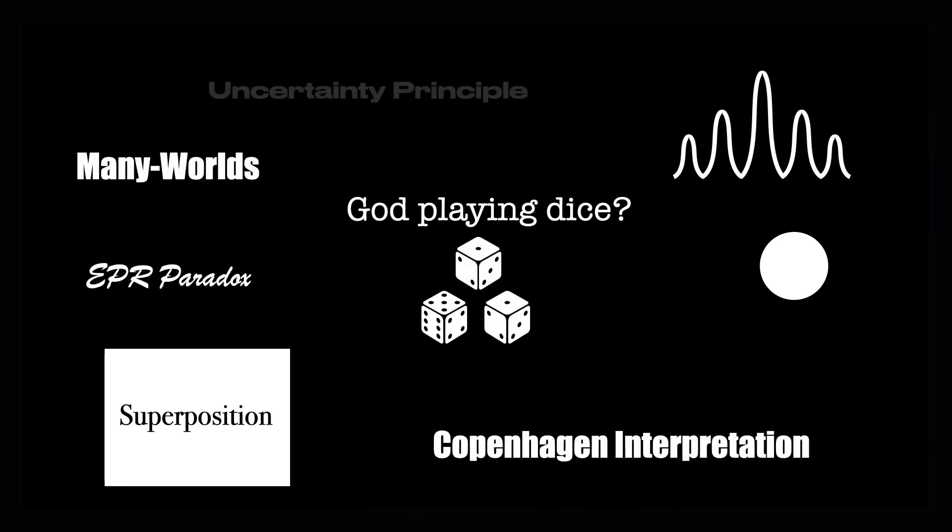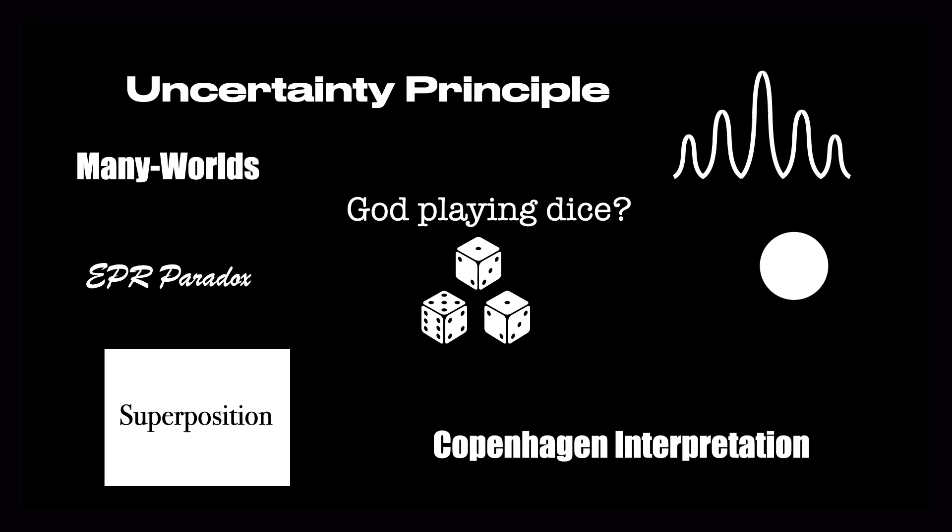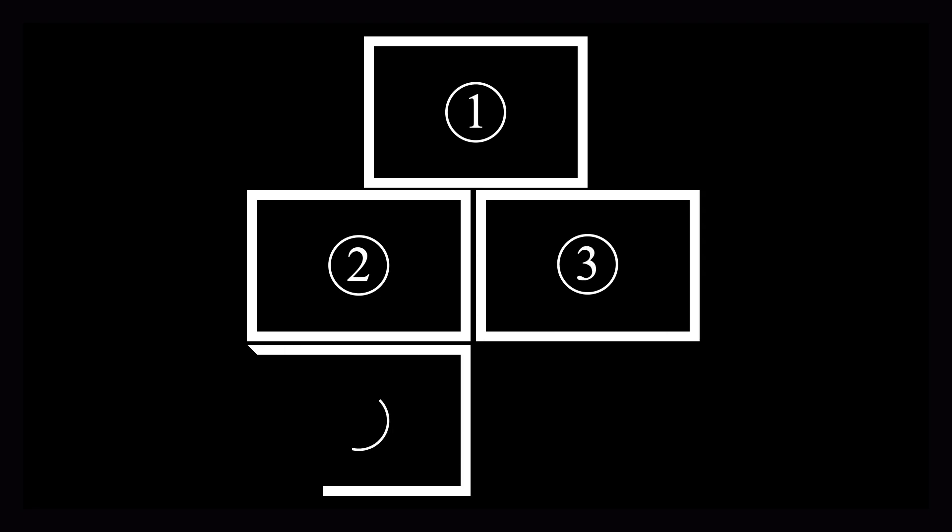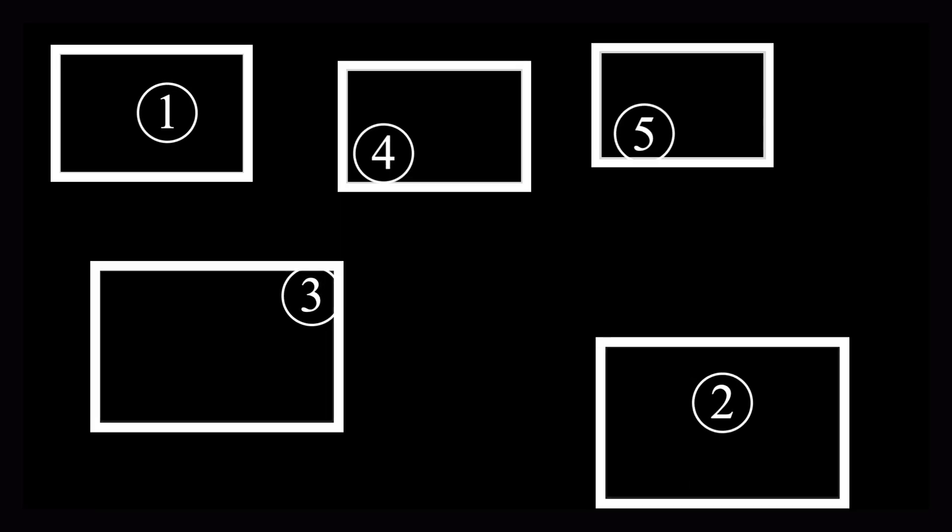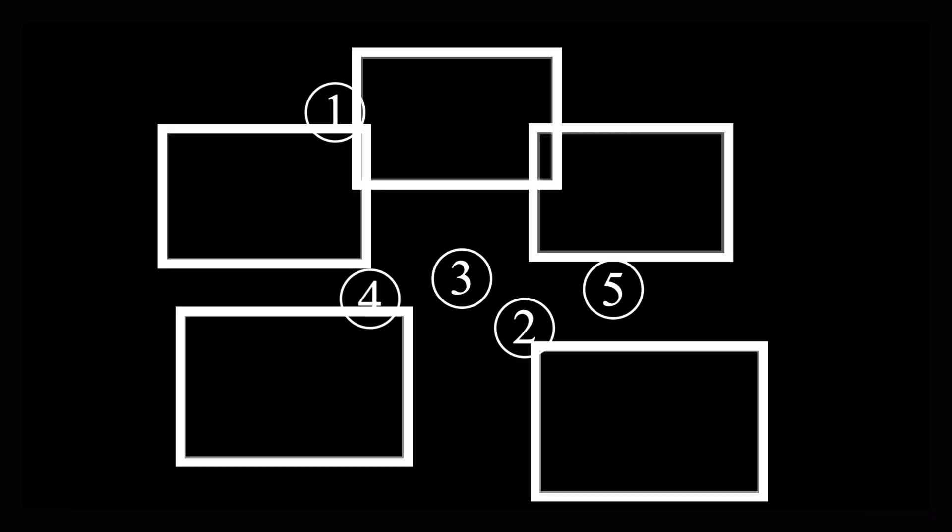Because of this, it has rightly earned the reputation of being a very difficult subject. But I'm going to let you in on a little-known fact. There are only five basic axioms or postulates that underlie quantum mechanics, and knowing these axioms can turn the seemingly jumbled mess of the theory into a simple, coherent unity.